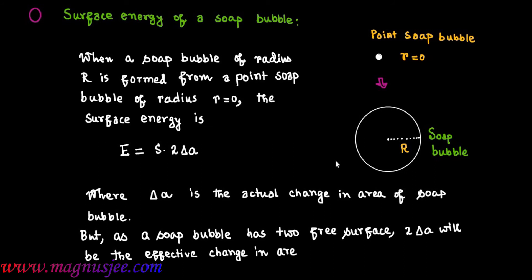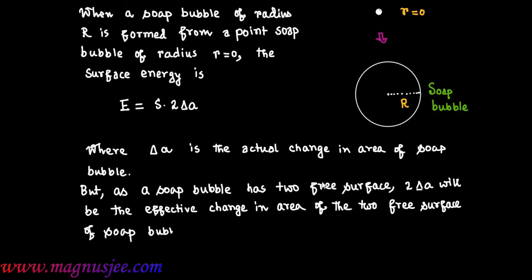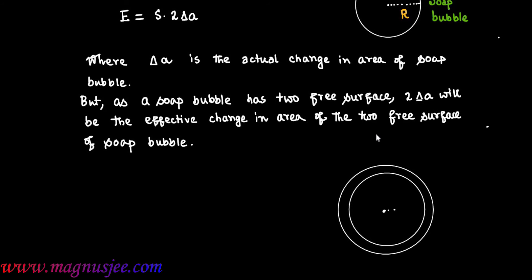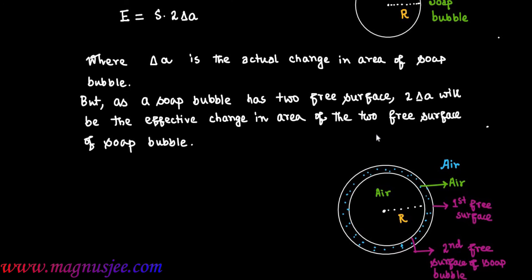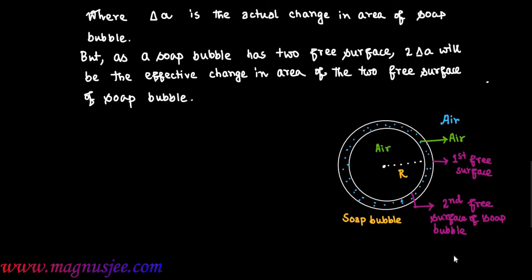The 2 delta A represents the effective change in area of the two free surfaces of the soap bubble. In the diagram, this is the soap bubble of radius capital R, surrounded by the medium, with air between the two free surfaces. This is the first free surface of the soap bubble, and this is the second free surface of the soap bubble.